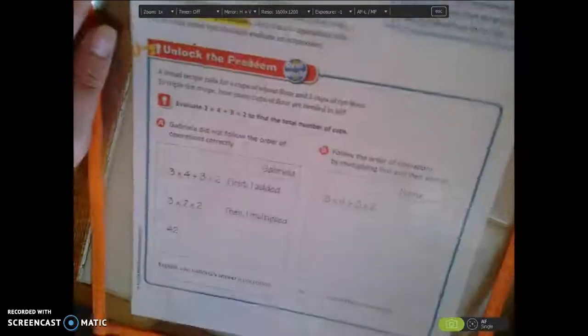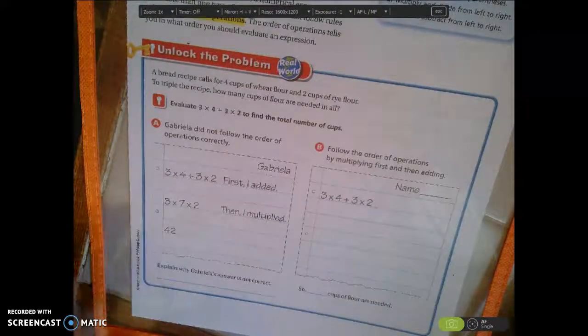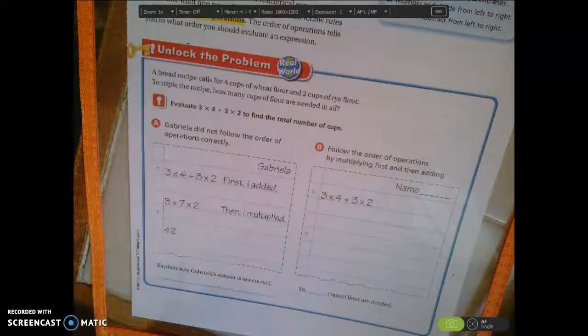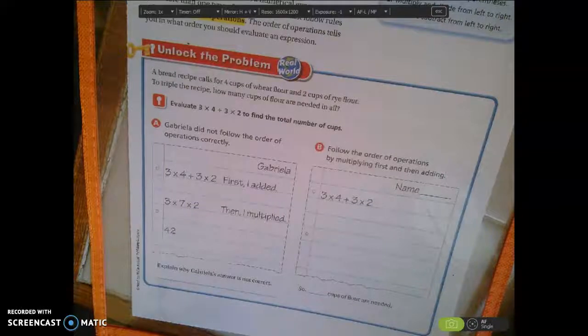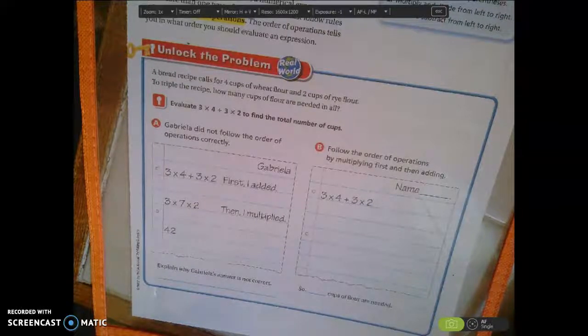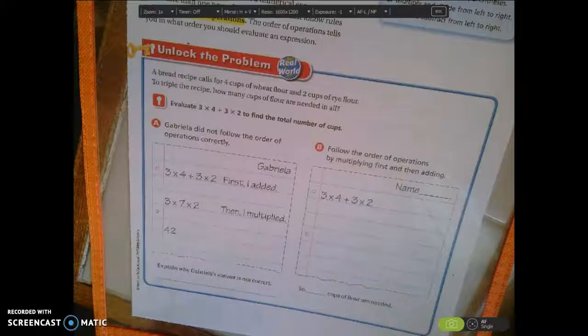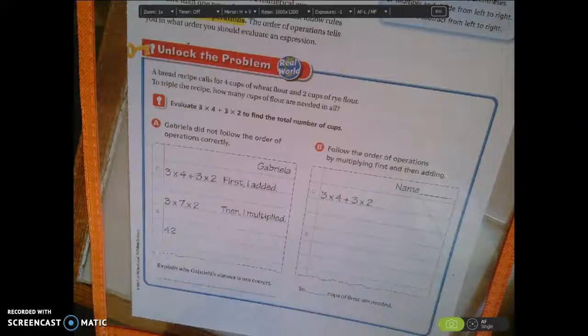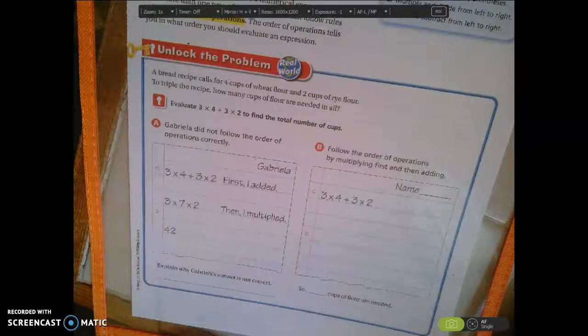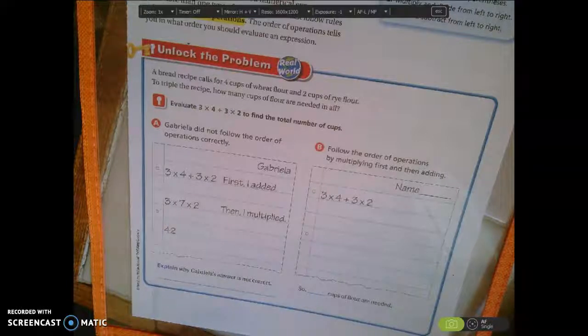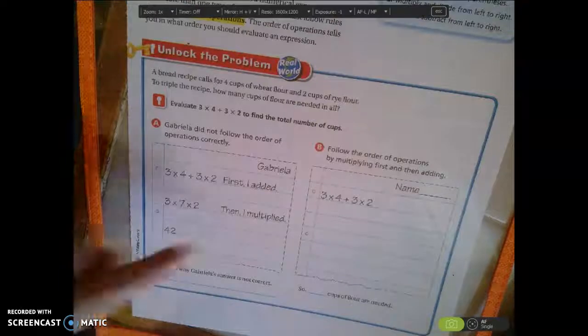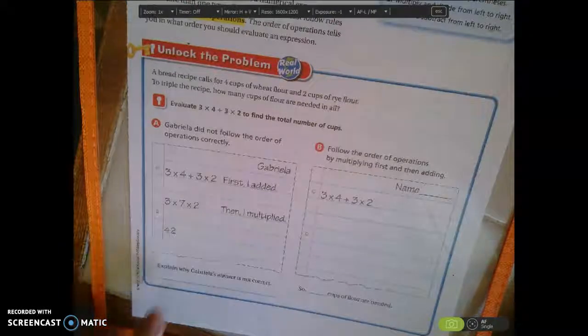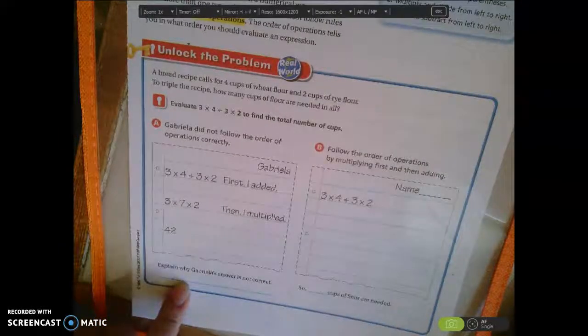So here we have the problem. A bread recipe calls for 4 cups of wheat flour and 2 cups of rye flour. To triple the recipe, how many cups of flour are needed in all? It says evaluate 3 times 4 plus 3 times 2 to find the total number of cups. Gabriella did not follow the order of operations correctly. She added first and then multiplied.